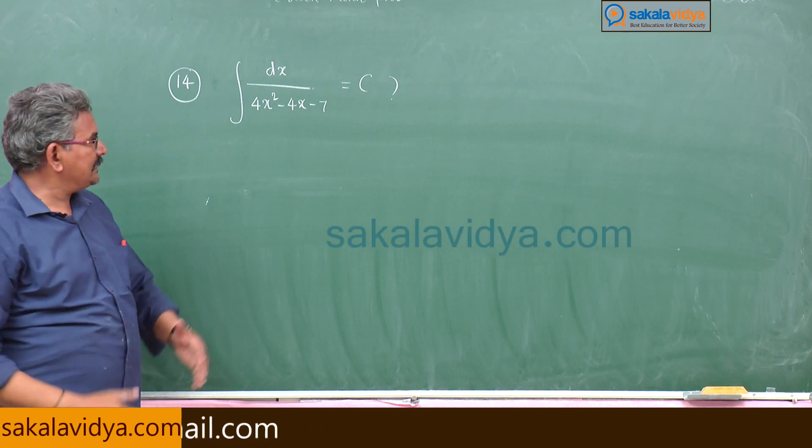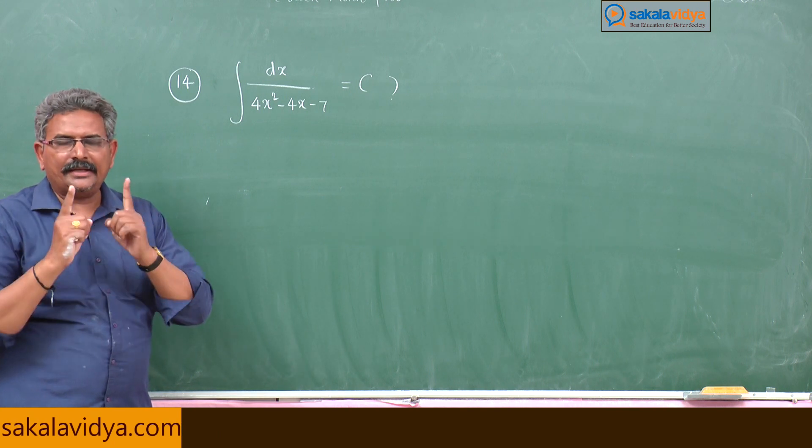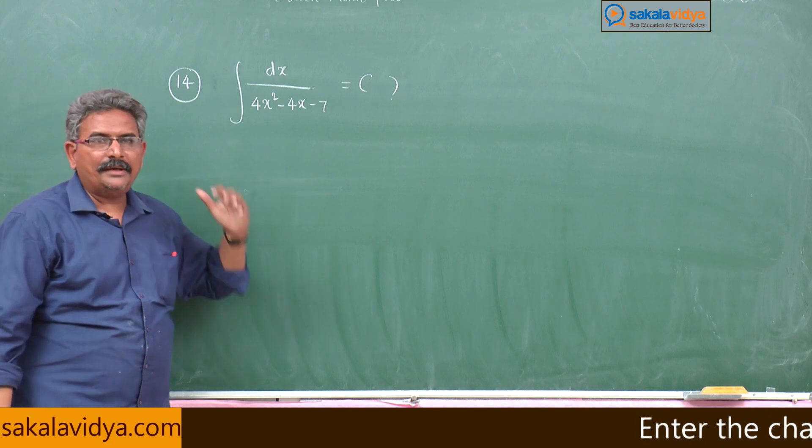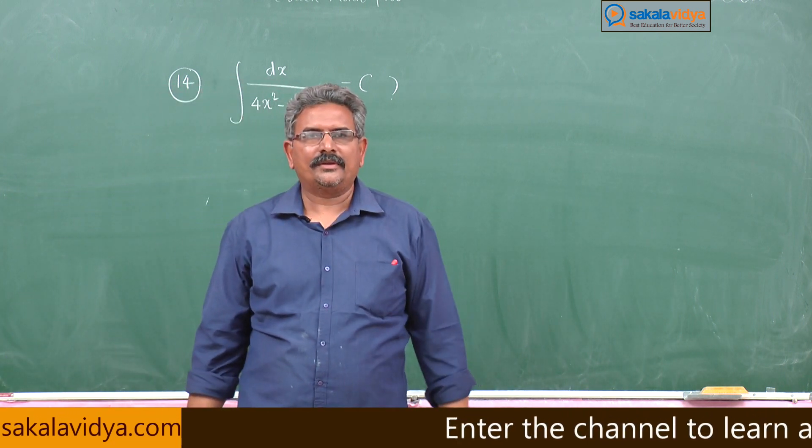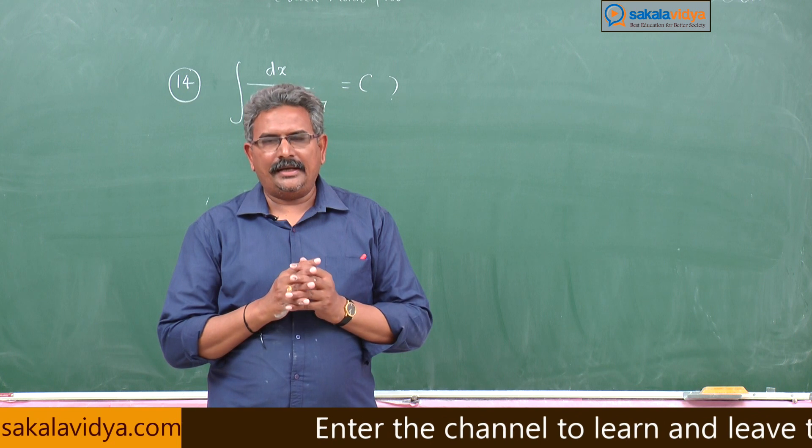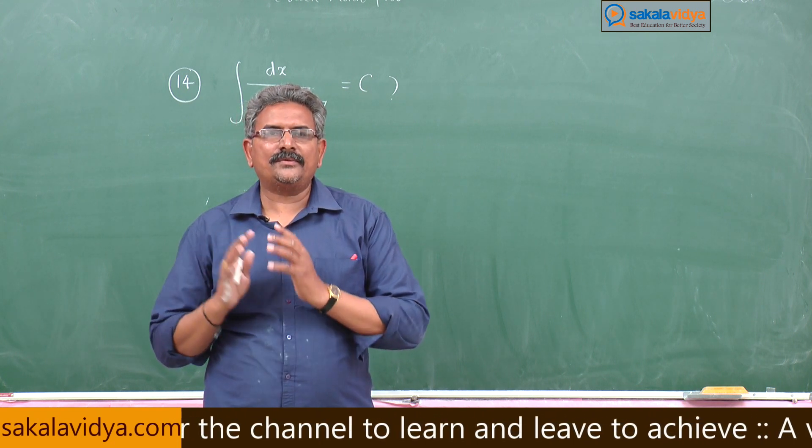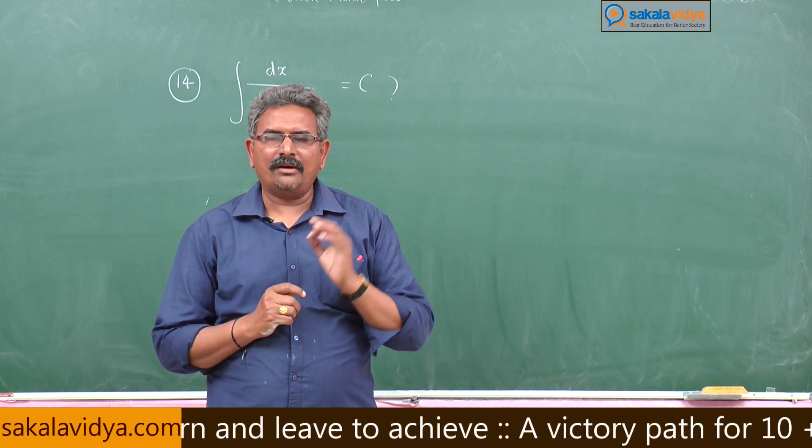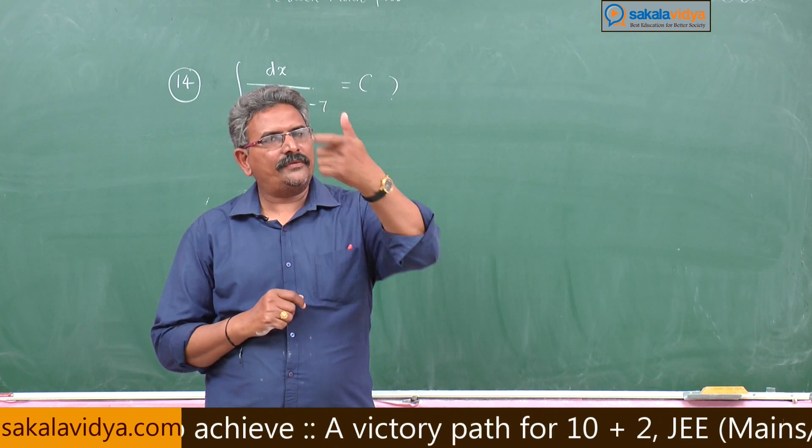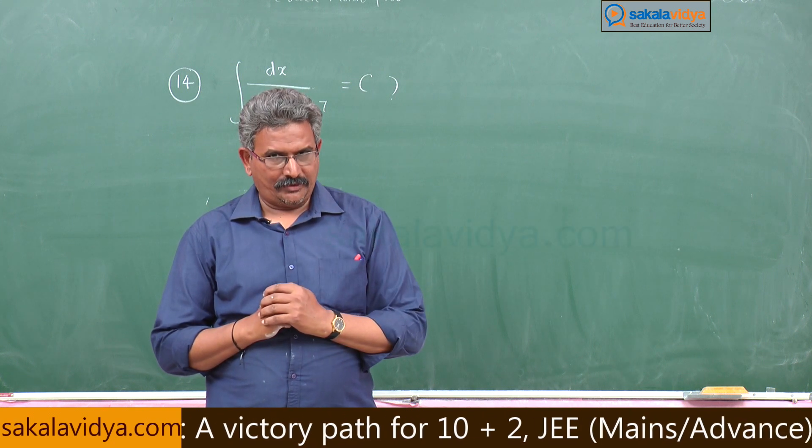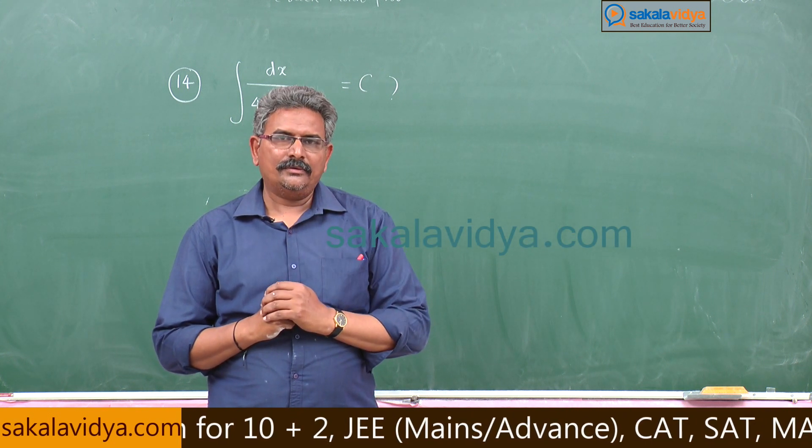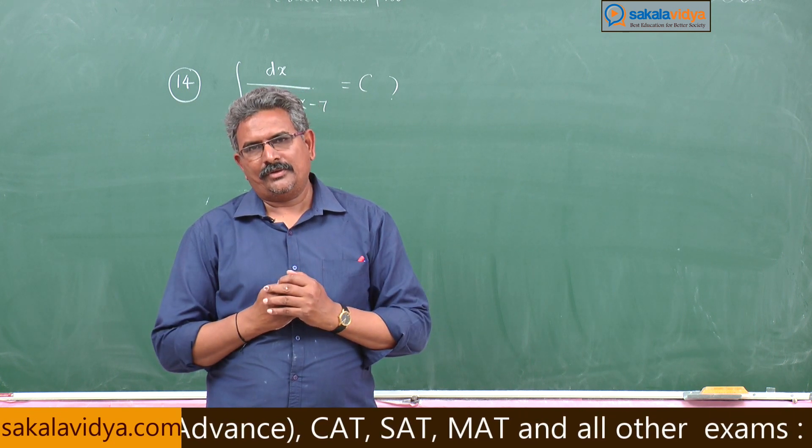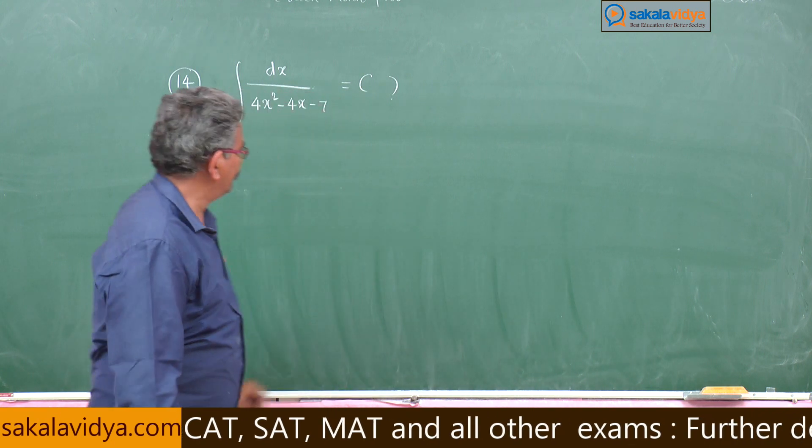So whenever these kind of problems are given, you should be very careful. It is in the form of 1 by a x square plus b x plus c. First check delta value, delta is equal to b square minus 4ac. If delta less than 0, our answer will be in terms of tan inverse. If delta greater than 0, definitely we get the problem answer in terms of log. So let us check this problem first.